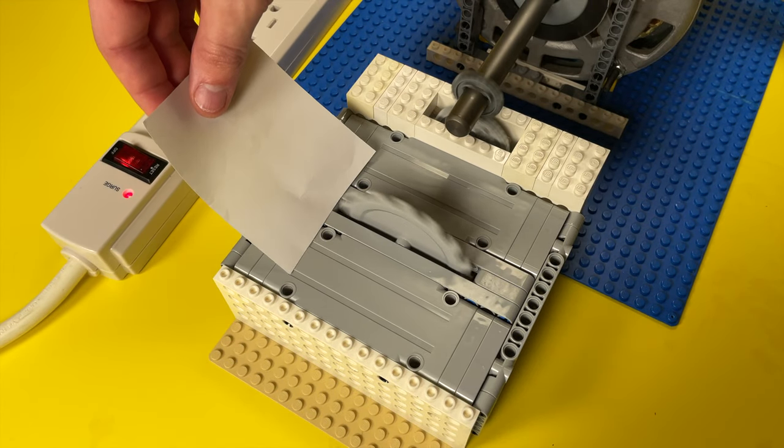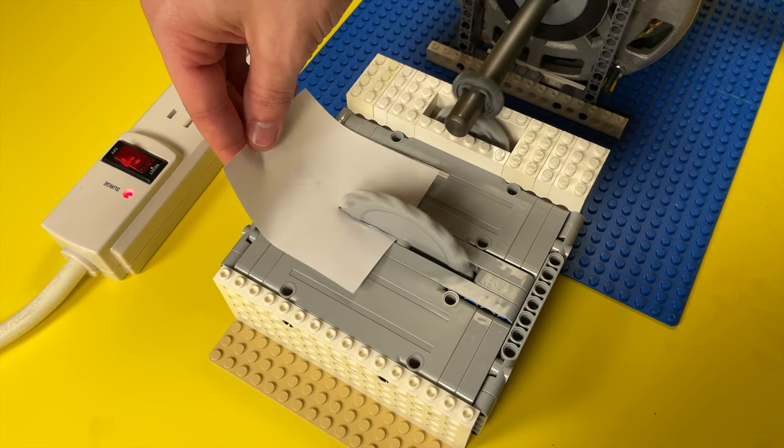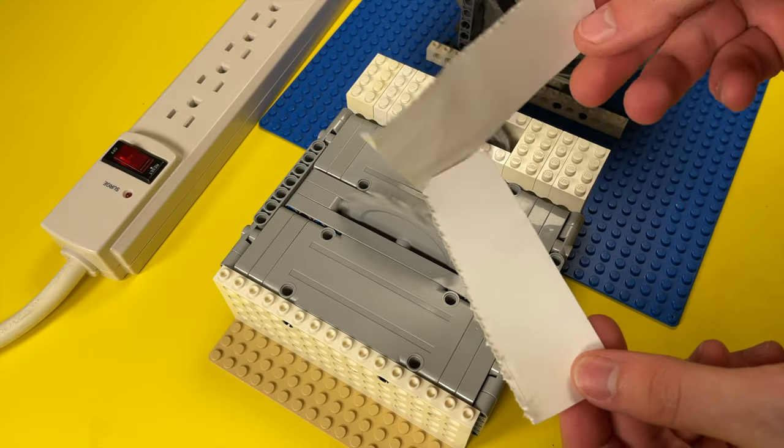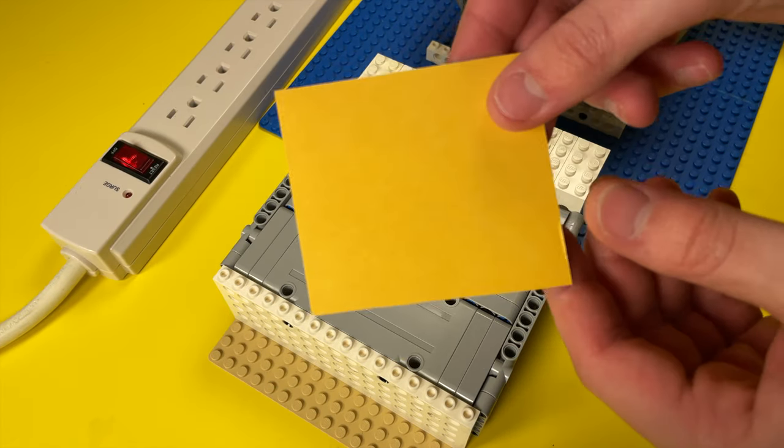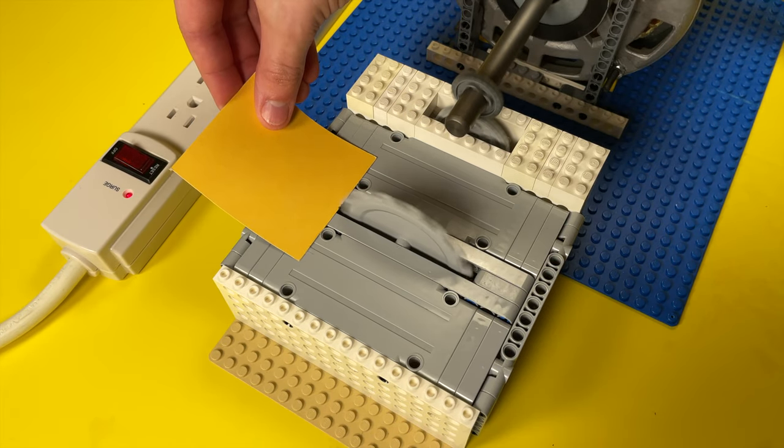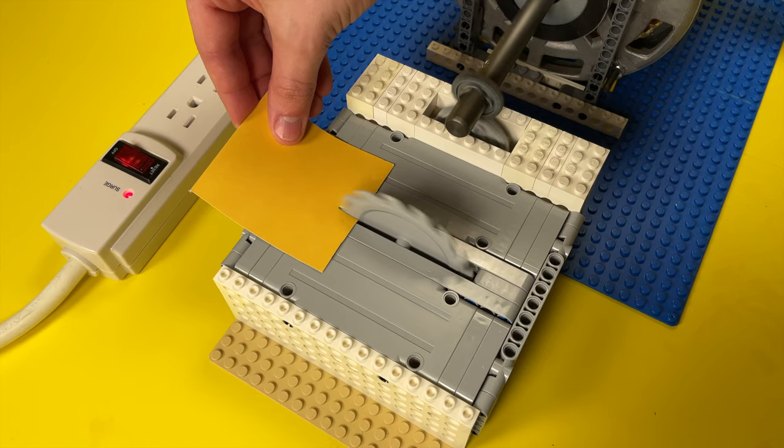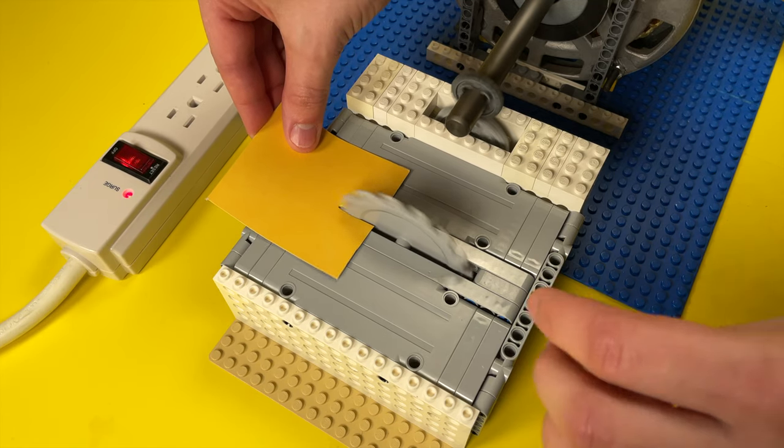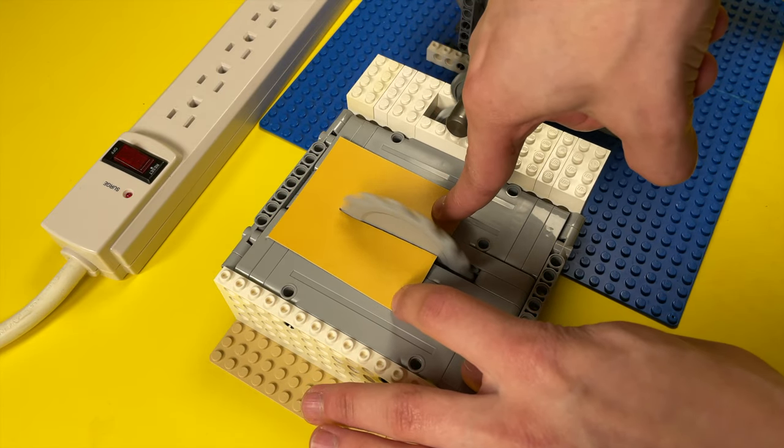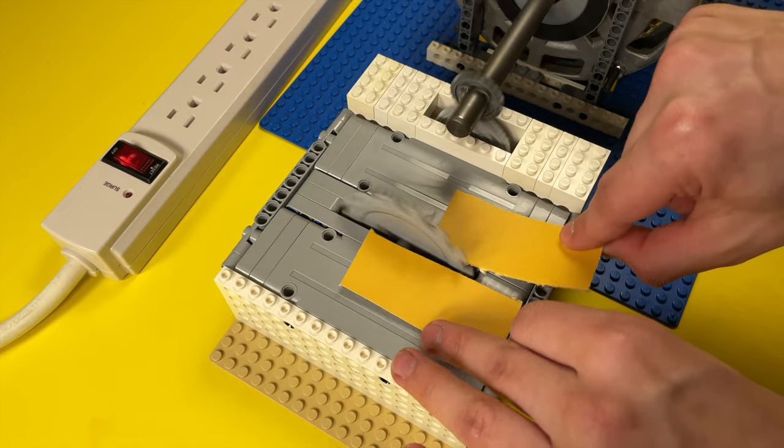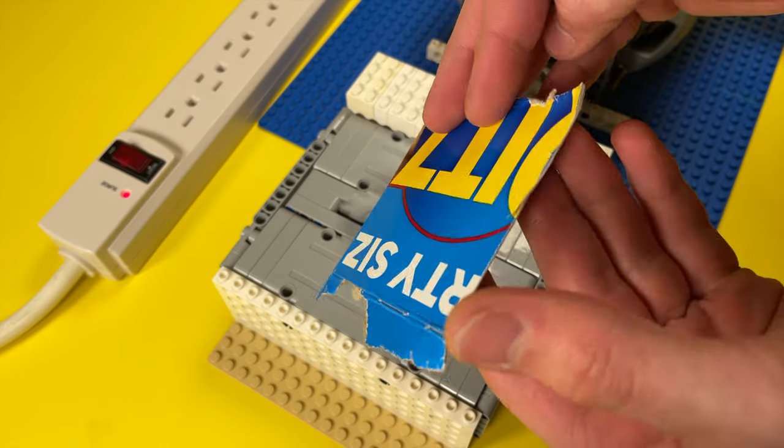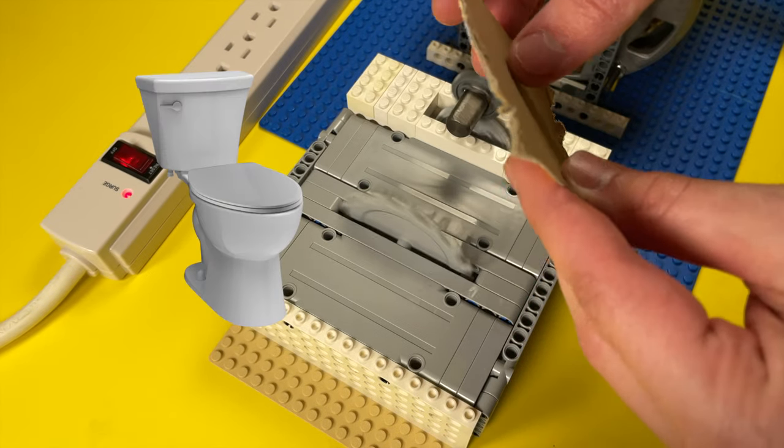Here's a piece of paper to start off with. And now, a thicker piece of poster board. Let's try some paper board now, this is the same stuff that toilet paper rolls are made of.